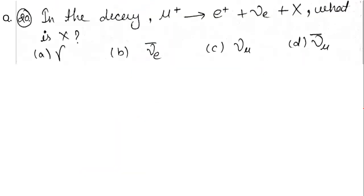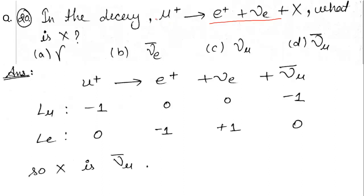Question 20: In the decay μ+ → e+ + ν + X, what is X? An electronic neutrino is being produced with the positron. Since μ+ is a lepton, there should be a corresponding muonic neutrino on the left. Moving that ν_μ to the right side converts it into an anti-neutrino (ν̄_μ). So X is the anti-muon-neutrino. In particle physics, these questions are not very hard — just read the question carefully and apply lepton conservation.